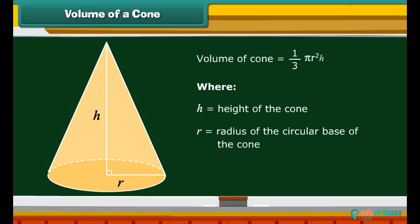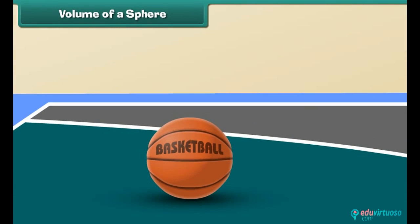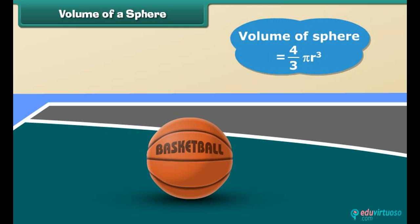What do we call this round ball? Yes, it's a sphere. It looks the same from every angle, isn't it? The formula to find the volume of this sphere V is four over three pi r cubed.